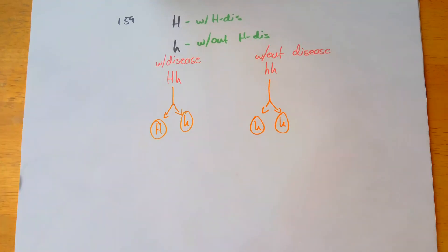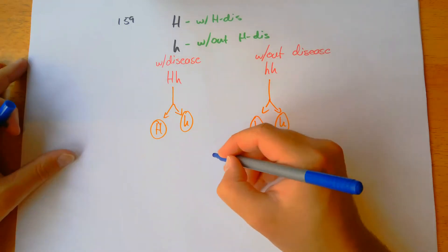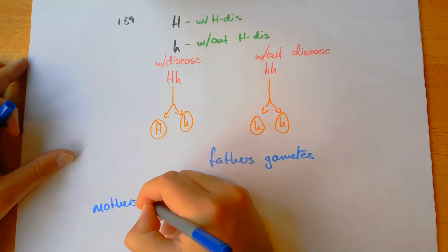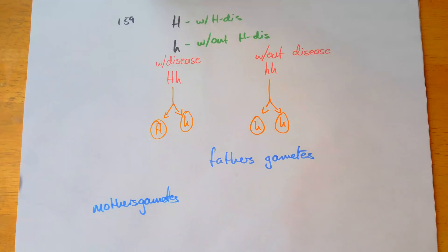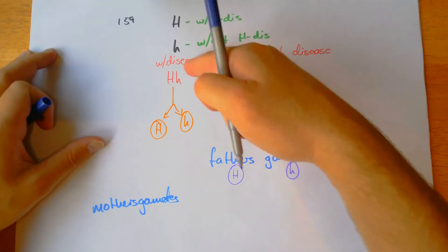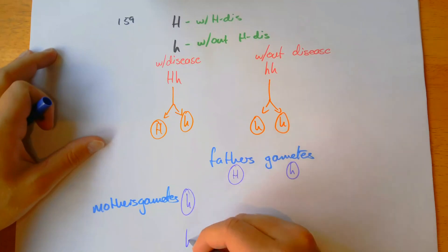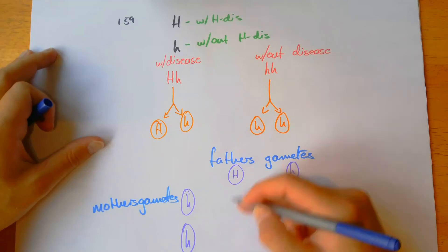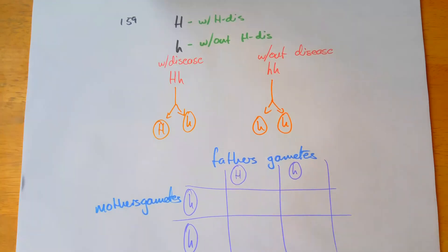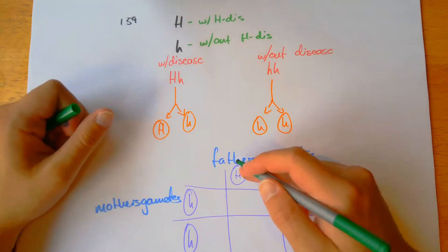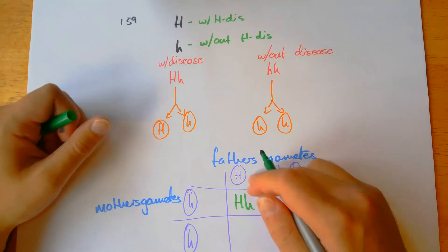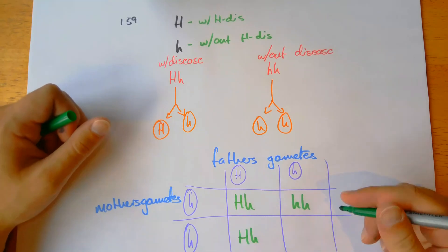Next we plug the gametes into our Punnett square. We start with the father's gametes on top and the mother's on the side. We'll put the alleles on the top for the father, and the mother's alleles on the sides, then draw our square. My preference is to do a proper square. Now we do the combinations: dominant and recessive gives us heterozygous; recessive and recessive gives homozygous recessive; dominant and recessive again gives heterozygous; and recessive and recessive gives homozygous recessive.